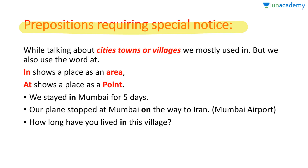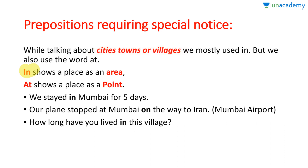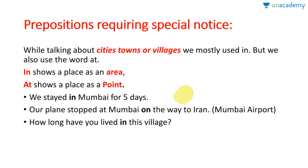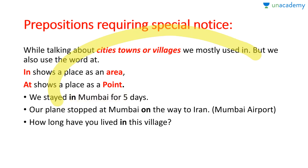Prepositions requiring special notice. When we talk about cities, towns, or villages — about living in or anything related to such places — we use two different prepositions: 'in' and 'at'. 'In' shows an area, while 'at' just shows a point. Example: we stayed in Mumbai for five days. When I say 'in Mumbai', I want you to imagine the whole city — the Gateway of India, the Taj Hotel, Bollywood, and everything.